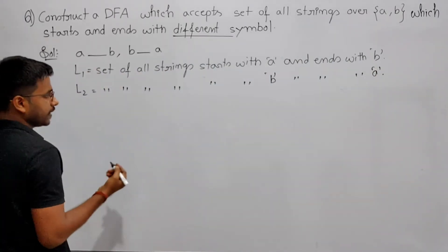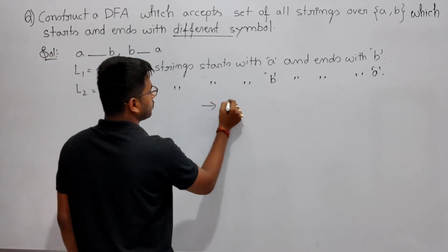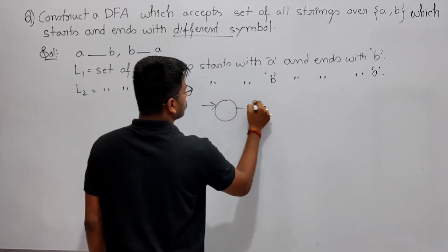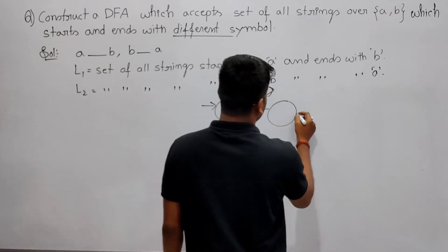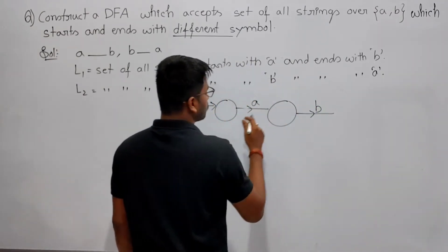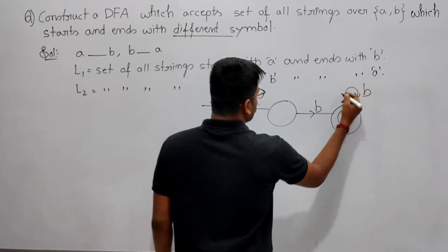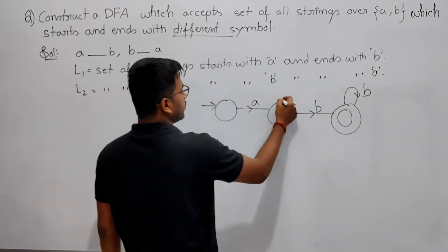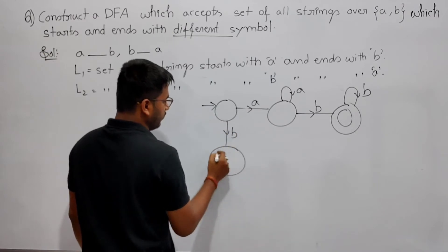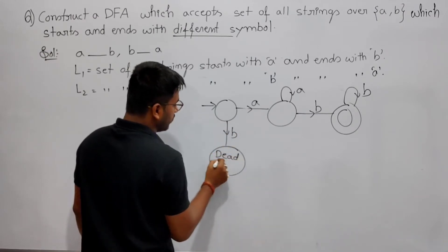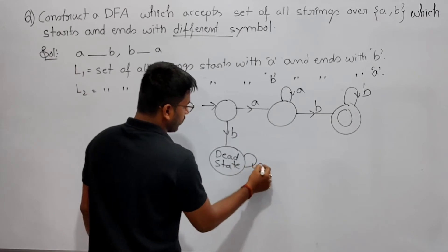For L1, construct a DFA. L1 is the set of all strings that start with a and end with b — any combination of a and b in between, but must end with b.